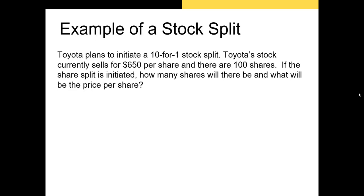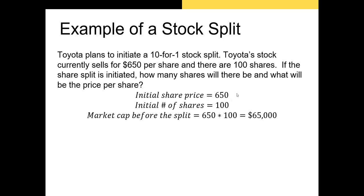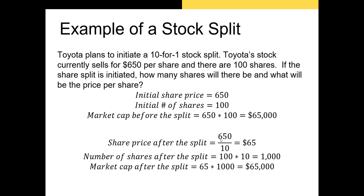Let's look at an example of how a stock split works. Toyota plans to initiate a 10-for-1 stock split. Toyota's stock currently sells for $650 a share, and there are 100 shares, giving a market cap of $65,000. After the share split, each of those shares is divided into 10 new shares worth $65 each — one-tenth of the original price — and we'll have 1,000 shares total. The market cap remains $65,000. In other words, stock splits don't change the market cap of a company; they're really just a way of reorganizing the number of shares outstanding and the price of that stock.